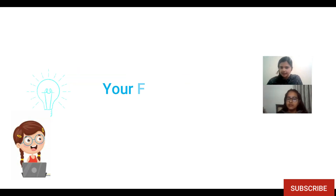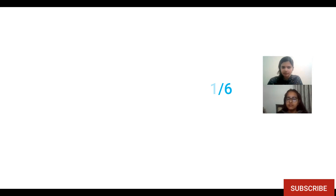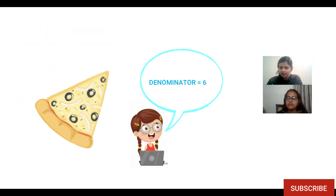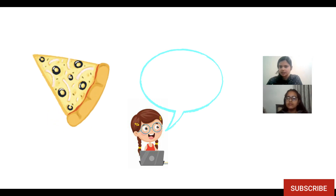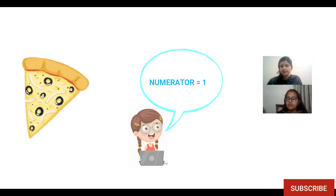And this is what a fraction looks like. In the lower value, the denominator depicts what is the total part — the total number of parts, which is six in the pizza over here. And the upper value, which is known as the numerator, depicts from the total parts, how many parts we are dealing with. That's fraction.